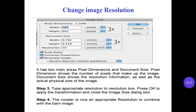Step number 5: Change Image Resolution. It has two main areas — pixel dimensions and document size. Pixel dimensions shows the number of pixels that make up the image. Document size shows the resolution information as well as the actual physical size of the image. Step number 6: type the appropriate resolution in the Resolution box. Press OK to apply the transformation and close the Image Size dialog box. Step number 7: the rooster is now at the appropriate resolution to combine with the bone image.